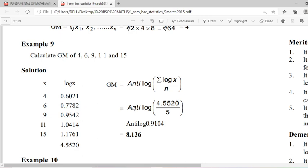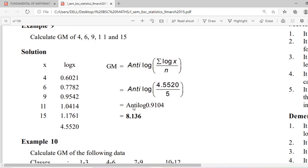We can compute using log formula. So we have x values: 4, 6, 9, 11, 15. Take the log values, the values are given here. Take the total, divide with the number n. n is equal to 5, take the average and take the antilog.